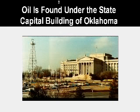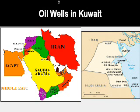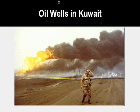Oil is found many places on the earth — it's even found under the state capitol building of Oklahoma. Here is a picture of the oil wells in Kuwait. The Middle East has an extreme amount of oil. The Bergen oil field in Kuwait is the world's second biggest oil field. This oil field was reduced to flames when the Persian Gulf War broke out in February of 1991. Kuwait is a very small country but has an enormous amount of oil underground and ranks as the world's number one or two source for oil. This shows a picture of the burning oil wells during the Persian Gulf War.